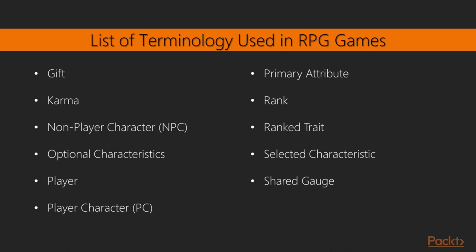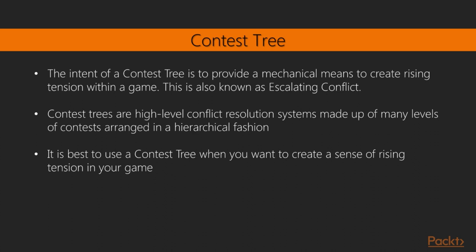To get a better understanding about the relationships between the attributes and characteristics, we need to put together a visual diagram. Contest tree: the intent of a contest tree is to provide a mechanical means to create rising tension within a game — also known as escalating conflict. Contest trees are high-level conflict resolution systems made up of many levels of contests arranged in hierarchical fashion. Lower level contests feed the higher level contests and affect the outcome of the higher level contests. In other words, the higher level contest could be to kill the big boss, but before you get there, there could be other mini battles you have to complete.